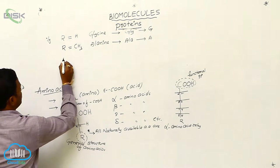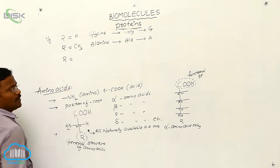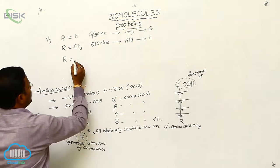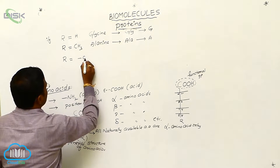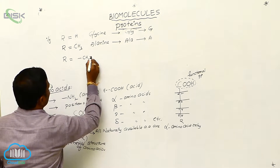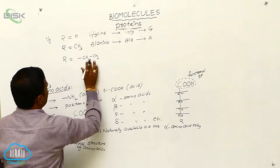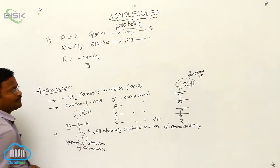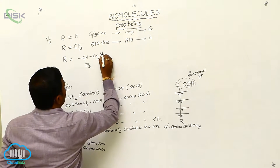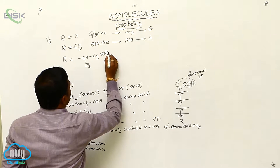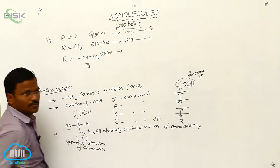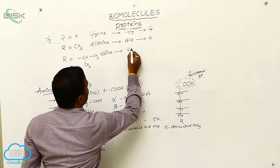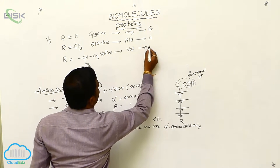In the general representation, if R is substituted with CH₂(CH₃)₂ — an isobutyl-type group — the resulting compound is called valine. Its three-letter formula is VAL and its single-letter code is V.